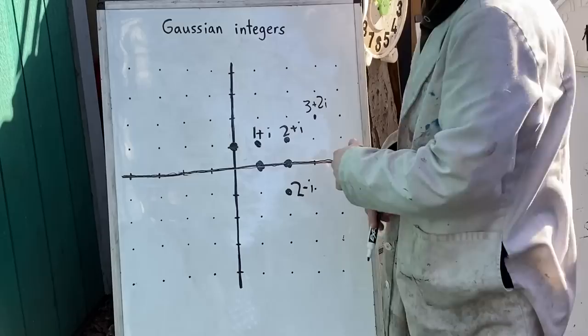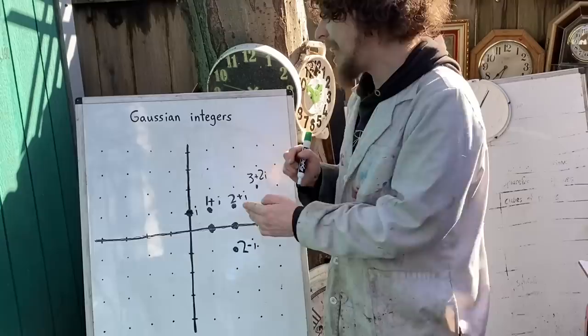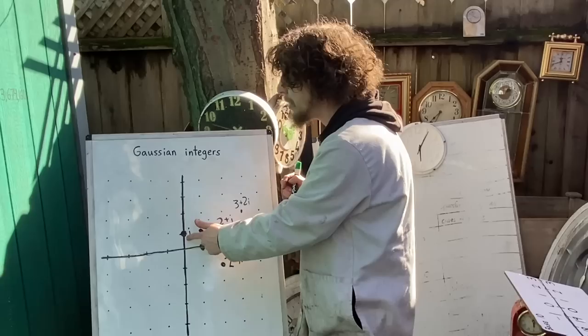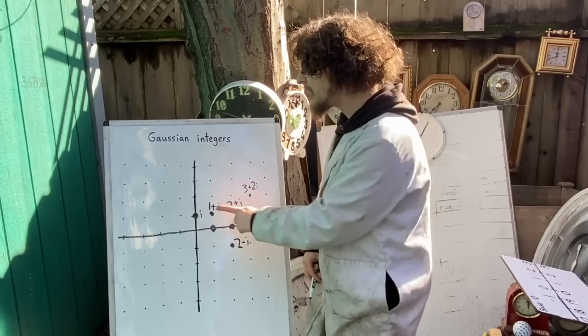Now some of you might be thinking, what about base i? But unfortunately, i is too small of a Gaussian integer to work very well for a base. Kind of like how base 1 is too small of a regular integer to work functionally and have all the powers that base 2 or onward have. We're gonna need to look a little further in the complex numbers than i.